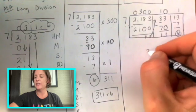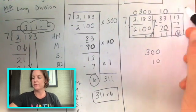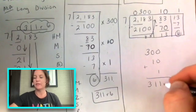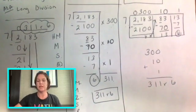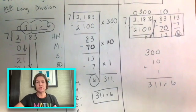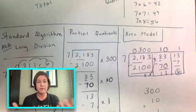Then we take our 300 plus our 10 plus our one. And we add them together to get 311. And don't forget that remainder, that remainder of six. So those are the three different strategies that are most commonly used to divide in fourth grade and fifth grade too.